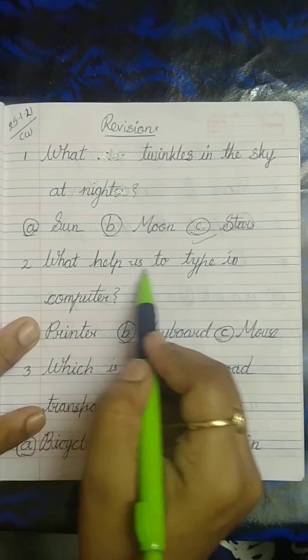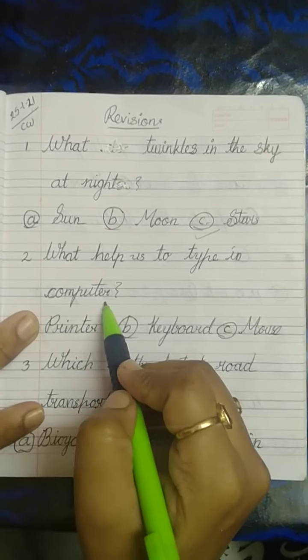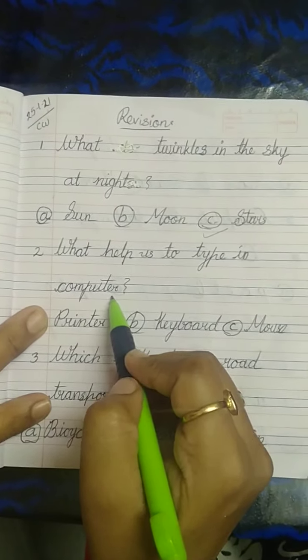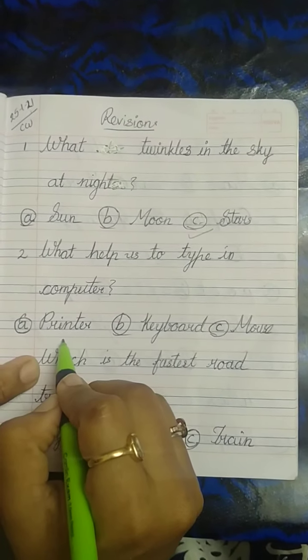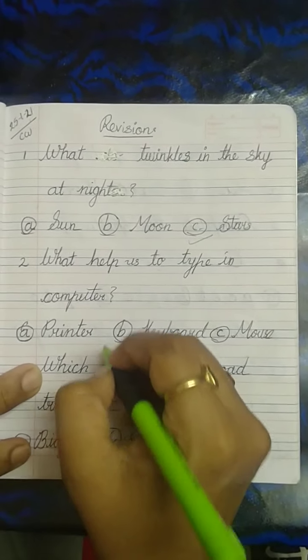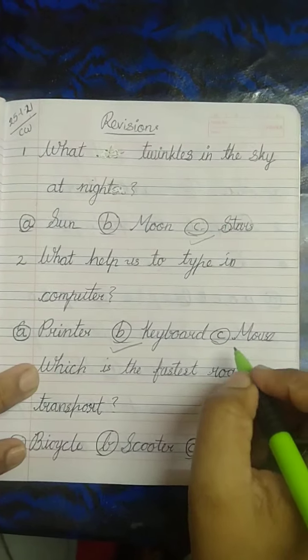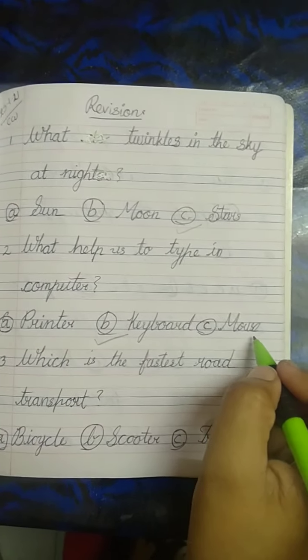What help us to type in the computer? Printer? No. Keyboard? Yes. We can type with the keyboard. So we have to type keyboard. Mouse? No.